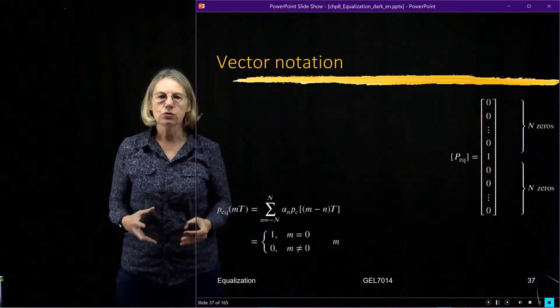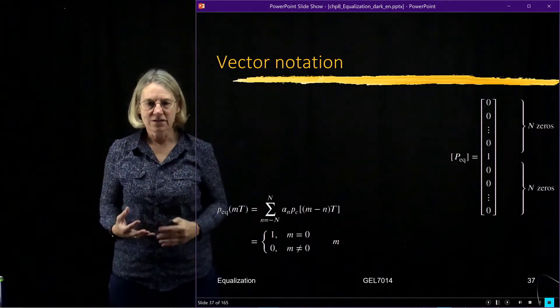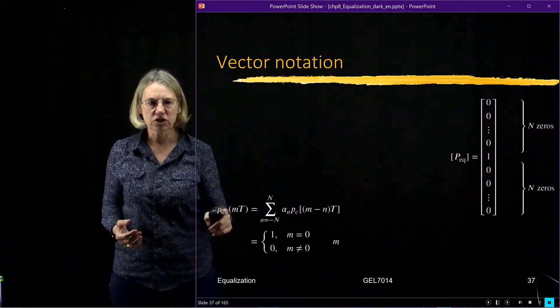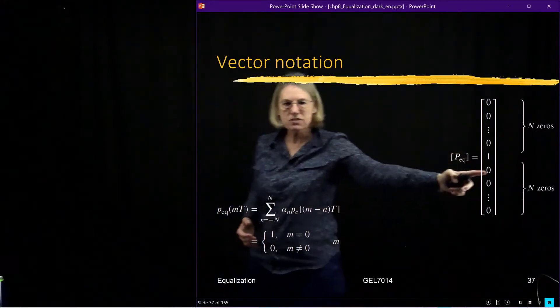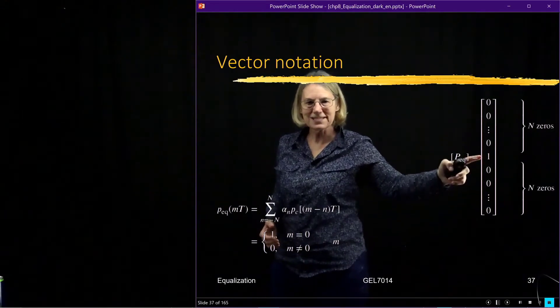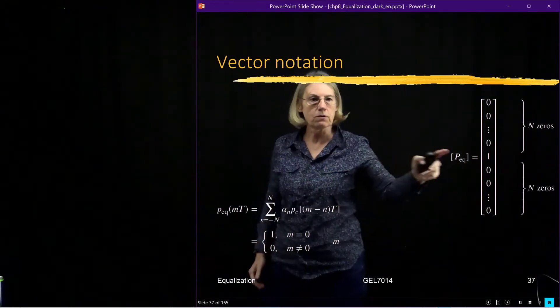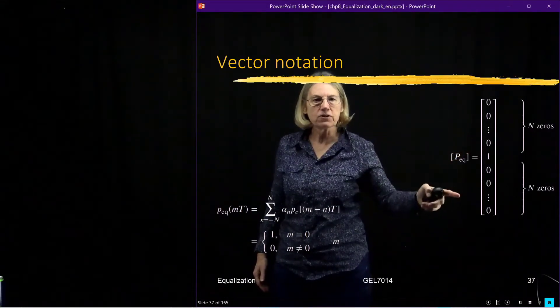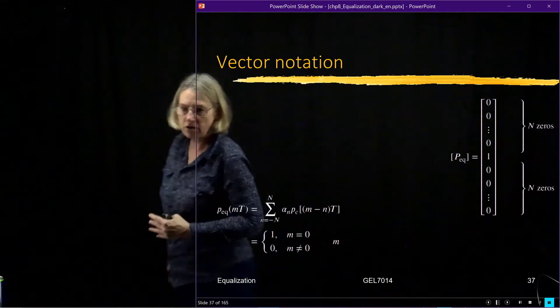And so what do I want? I said that I wanted to have zero force zero ISI. So that means that the output of my filter, I want it to look like this vector. This vector has zeros everywhere except during the desired time, which is the middle one, which is my reference time of zero. Every other output of that filter is going to contribute zero to the other symbols.